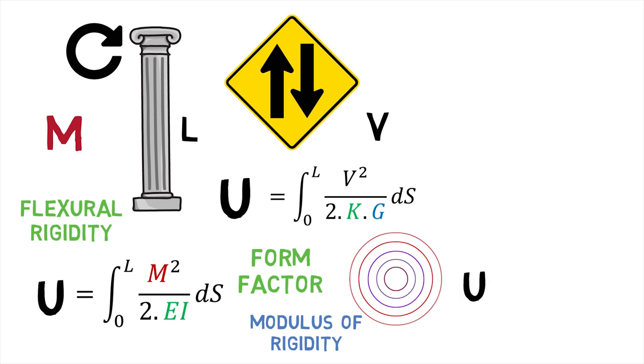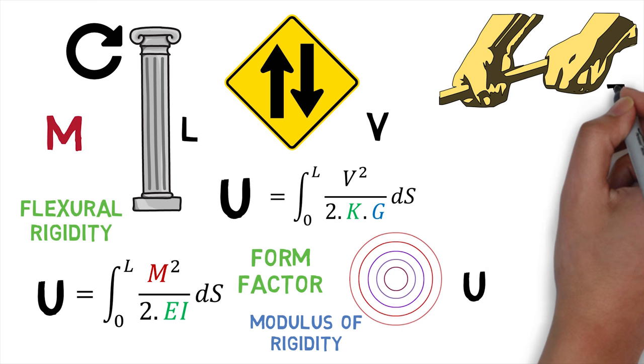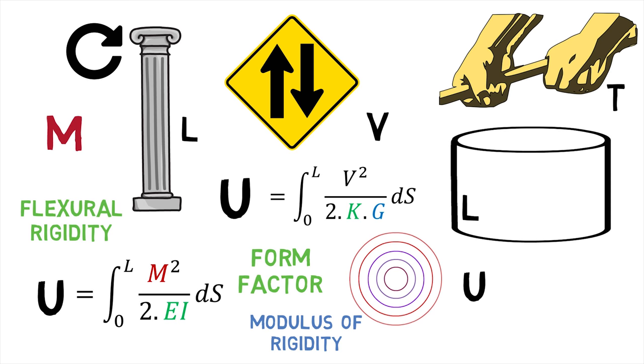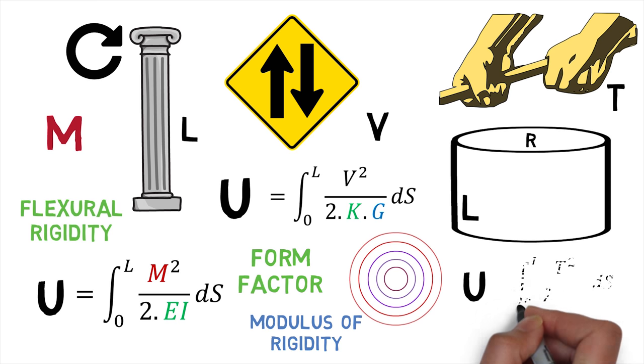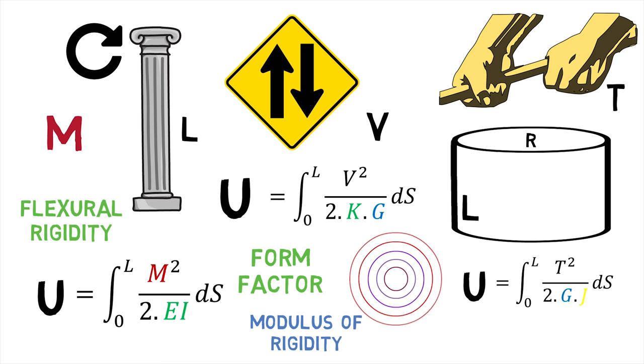The last case is that of a strain energy stored due to a torque T on a shaft of length L and radius R. The key change in the integral is the inclusion of polar moment of inertia, denoted by J.